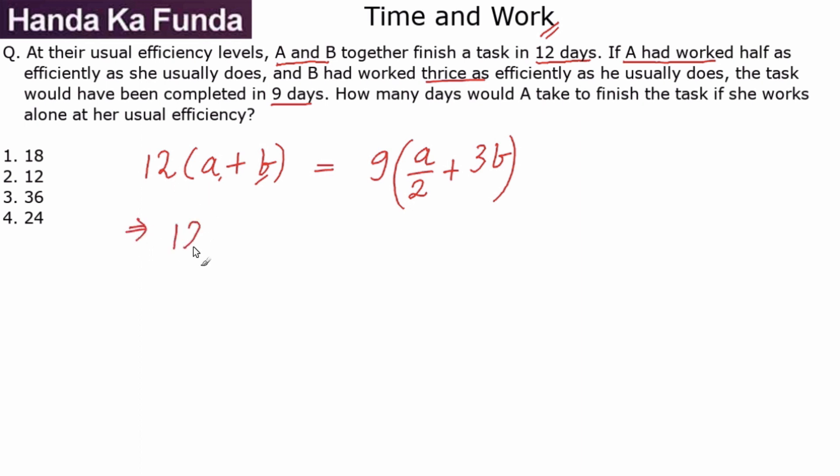What do I get here? I have 12a minus 9a/2, so minus 4.5a is equal to 9 into 3b, that is 27b, minus 12b. This gives me 7.5a equals 15b, or I get the value of a as 2b, which means A does twice the amount of work that B does in one day. So A is twice as efficient as B.